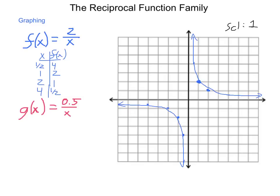Now we're going to do the same thing for g of x. Again, we have x and g of x values. We cannot put in 0 because that's where our vertical asymptote is. If we put in 1, one-half divided by 1 is one-half. If we put in 2, one-half divided by 2 is a quarter. And if we put in 4, one-half divided by 4 is an eighth. We're falling to that asymptote pretty quickly.